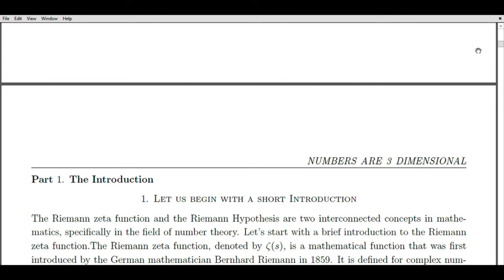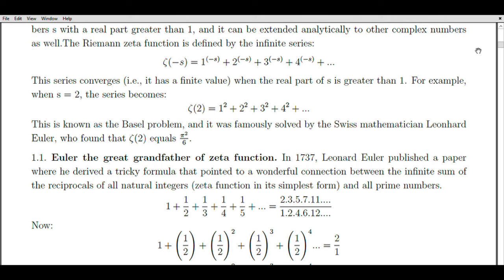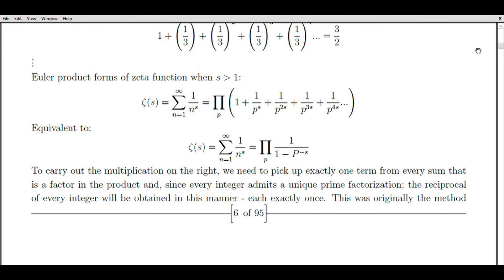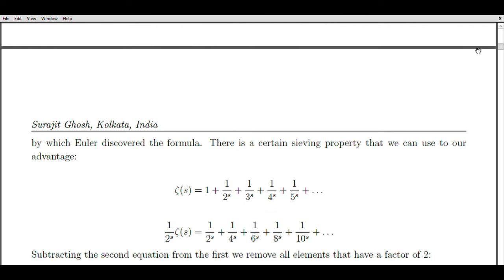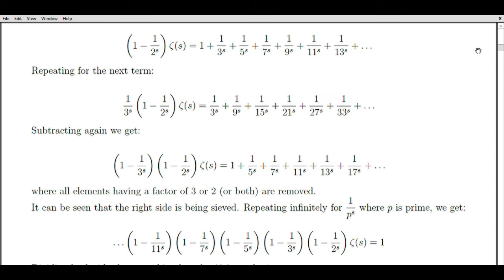However, in my approach, I departed from these conventional methods and built upon Euler's work by employing an induction process that involved taking infinite products of zeta values. Through this approach, I obtained initial results that challenged established notions, such as zeta(1) being equal to 1 instead of infinity, and zeta(-1) being equal to one-half rather than Ramanujan's value of minus one-twelfth. This deviation from conventional thinking led me to question the existence of absolute zero or singularities, and I realized that the poles of the zeta function could not be left unaddressed.